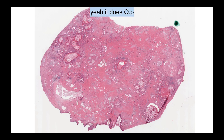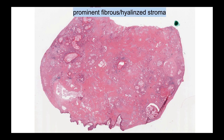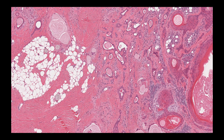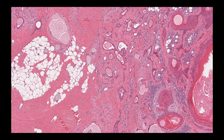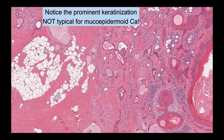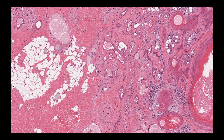This example looks different because the stroma is prominently fibrous with adipose metaplasia, and the cellular component shows squamous metaplasia. A pitfall to be aware of: pleomorphic adenomas may also show mucinous metaplasia with mucocytes next to areas of squamous metaplasia, mimicking mucoepidermoid carcinoma. A helpful distinguishing feature is that prominent keratinization is not a feature of mucoepidermoid carcinoma but is typically seen in pleomorphic adenoma.